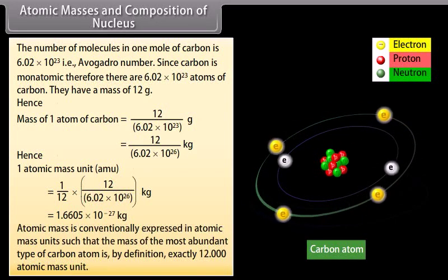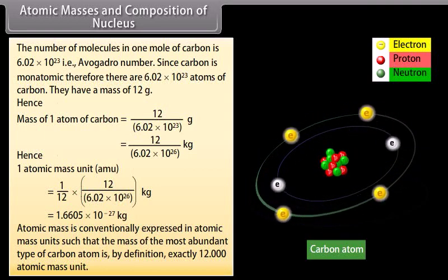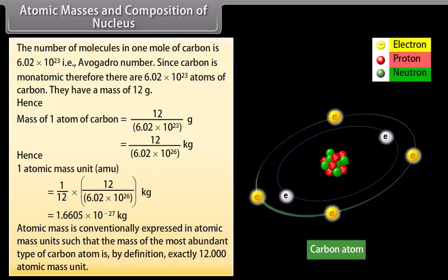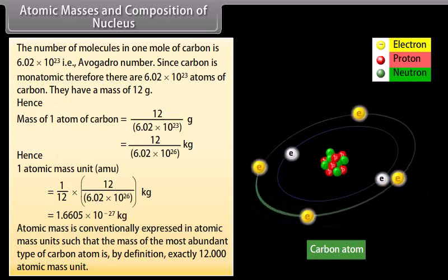Atomic mass is conventionally expressed in atomic mass units such that the mass of the most abundant type of carbon atom is, by definition, exactly 12 atomic mass units.